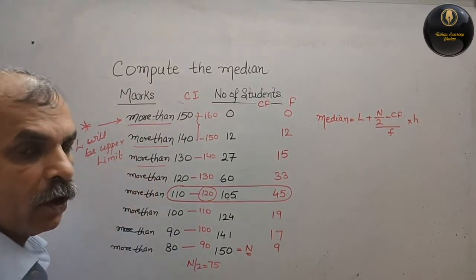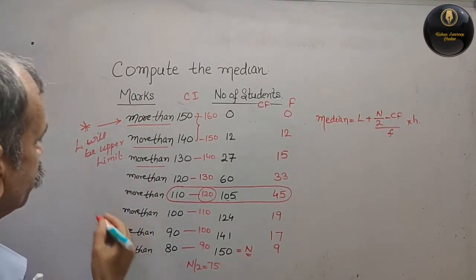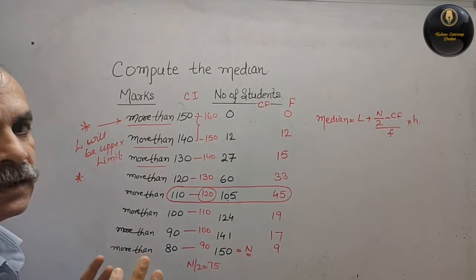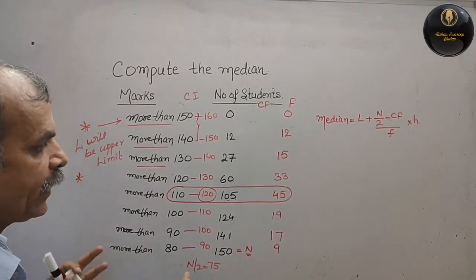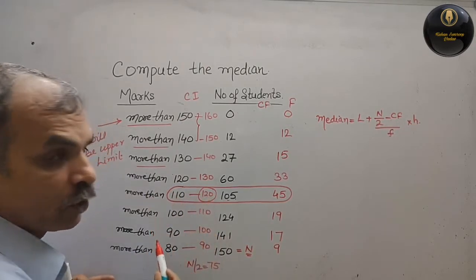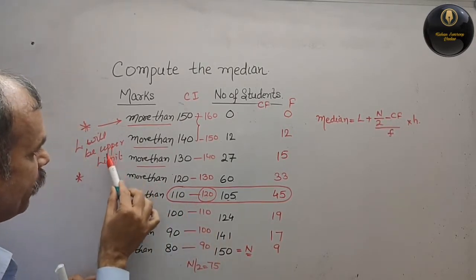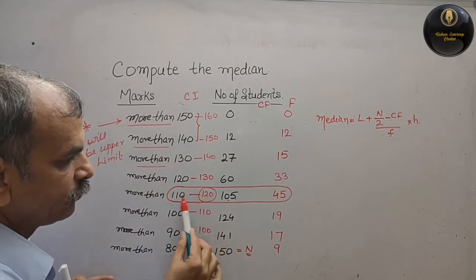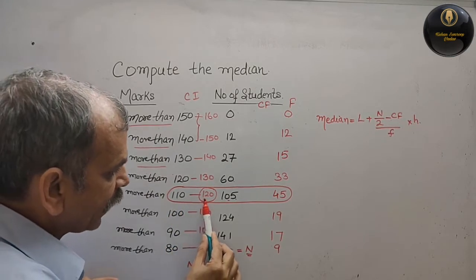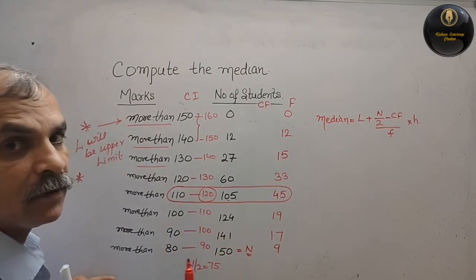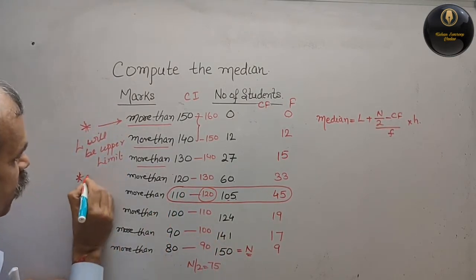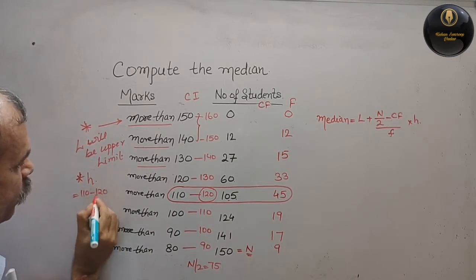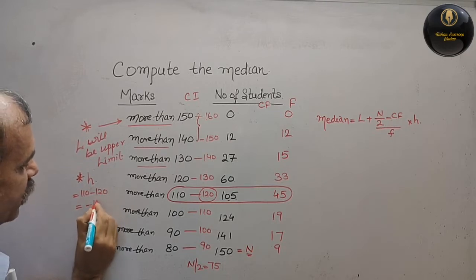Next, or second important thing, that is your what? Height. Height, you can see 120 minus 110 lower limit, that means it was interchange now. So you can see 110 minus 120. So h is equal to 110 minus 120, that is equal to minus 10.